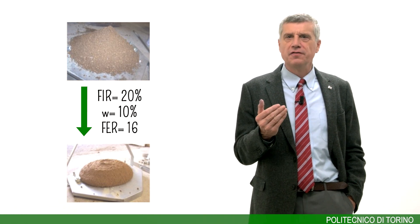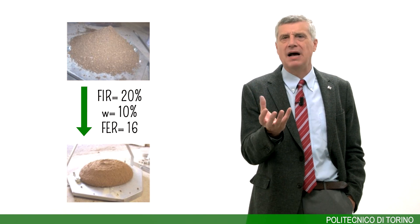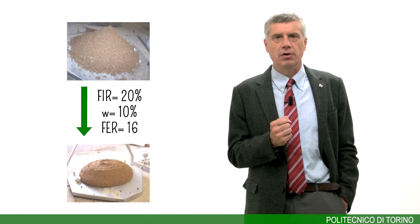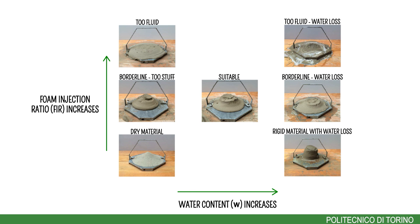You can observe the result in terms of a homogeneous mass with a good cone fall. It is important to understand that for the same soil, suitable conditioning depends not only on the foam content but on a combination of the water present in the soil and the foam content. If there is too much water and foam, the conditioned soil is too fluid. If there is too much foam and not enough water, the material is not properly conditioned. Only a good combination of water and foam content gives a good result, as you can see in the central part of the scheme.